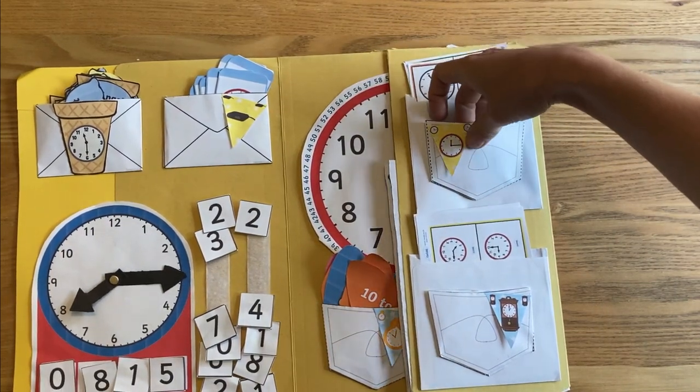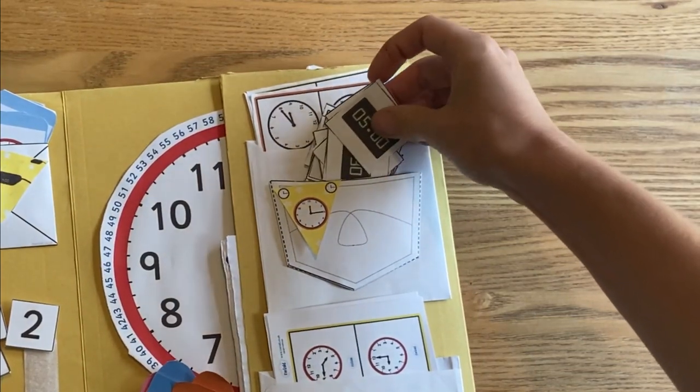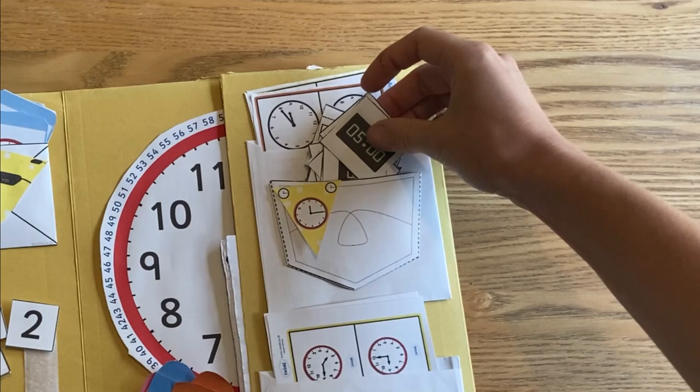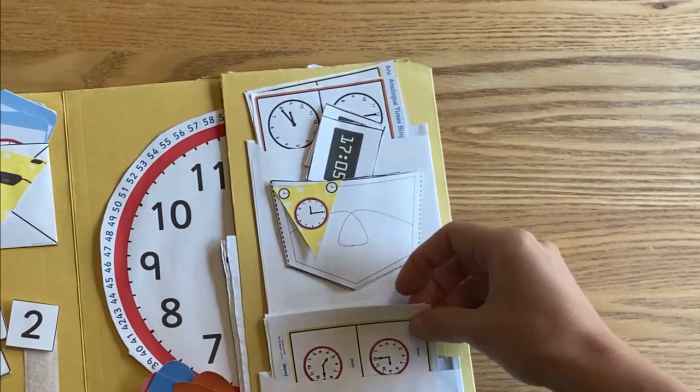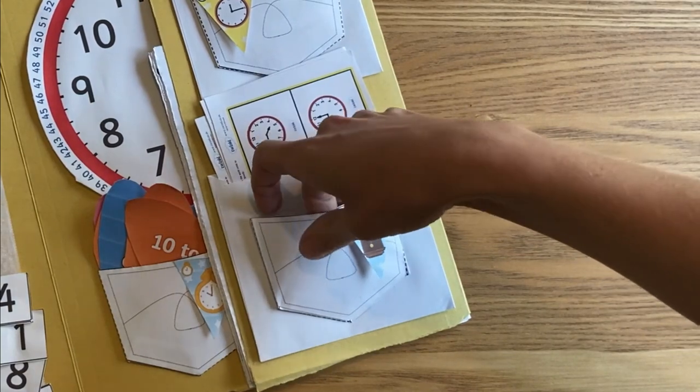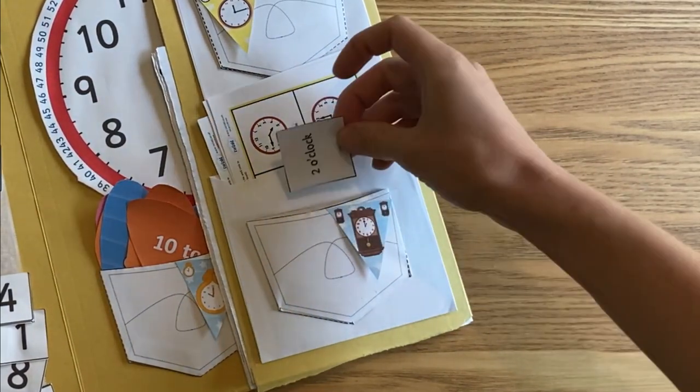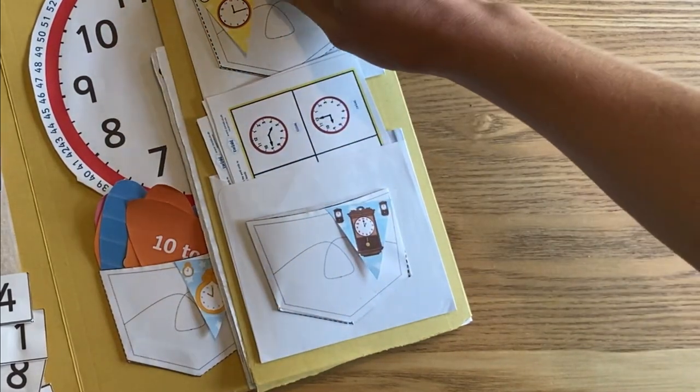We've also got some further bingo sheets here with different labels on, with times like two o'clock, so another way of looking at the time. You can do analog and digital and just the words as well.